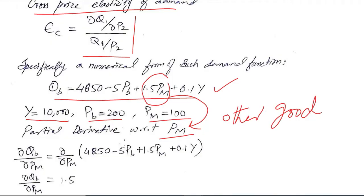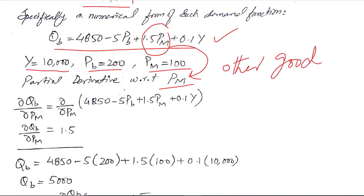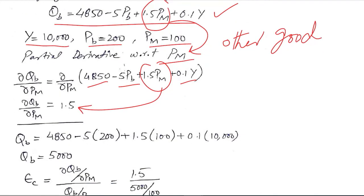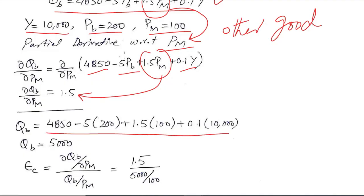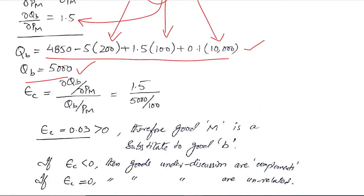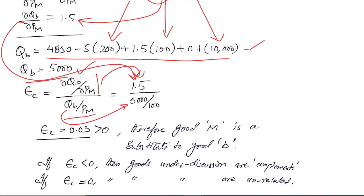The derivative can be calculated using the standard procedure of partial derivatives. The terms not containing Pm reduce to zero, and the derivative equals 1.5. This is the demand function, and after substituting the given values of Pb, Pm, and Y, we get a value of Qb equal to 5000. Substituting into the formula, we have the derivative answer, Qb, and Pm — 5000 was calculated from the given data.